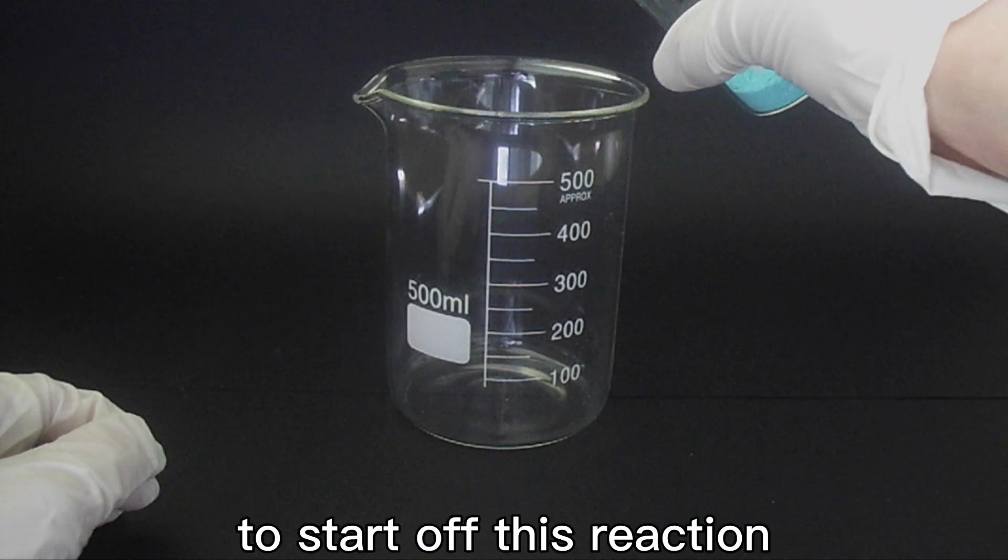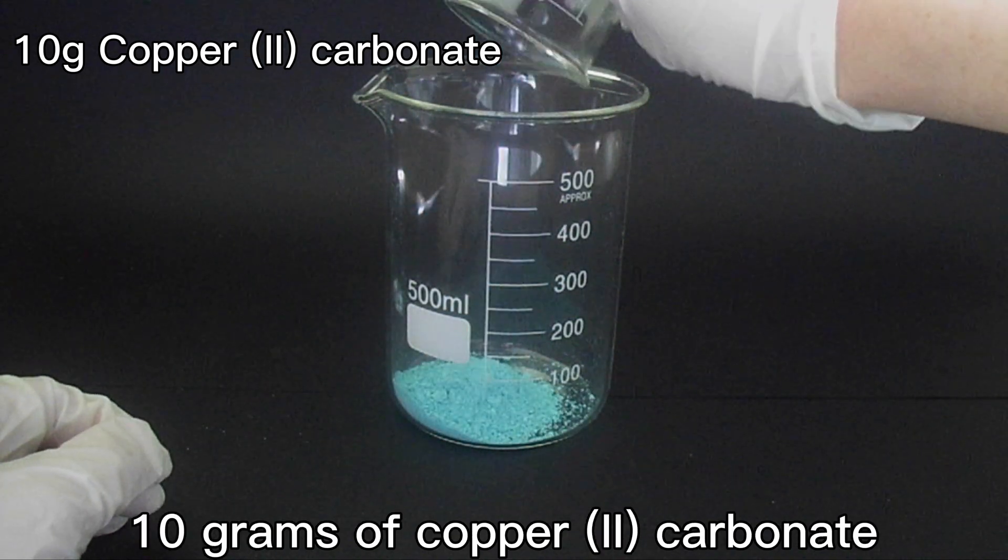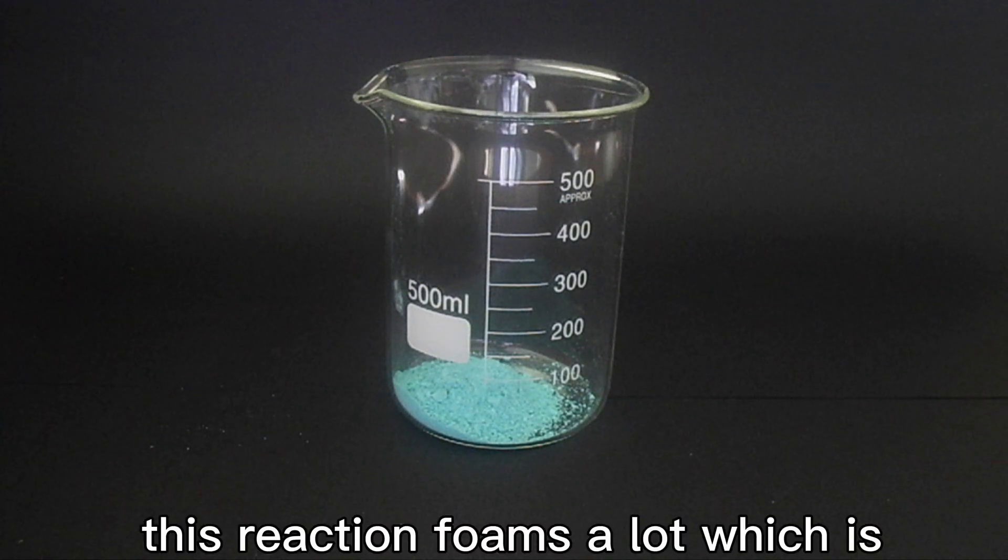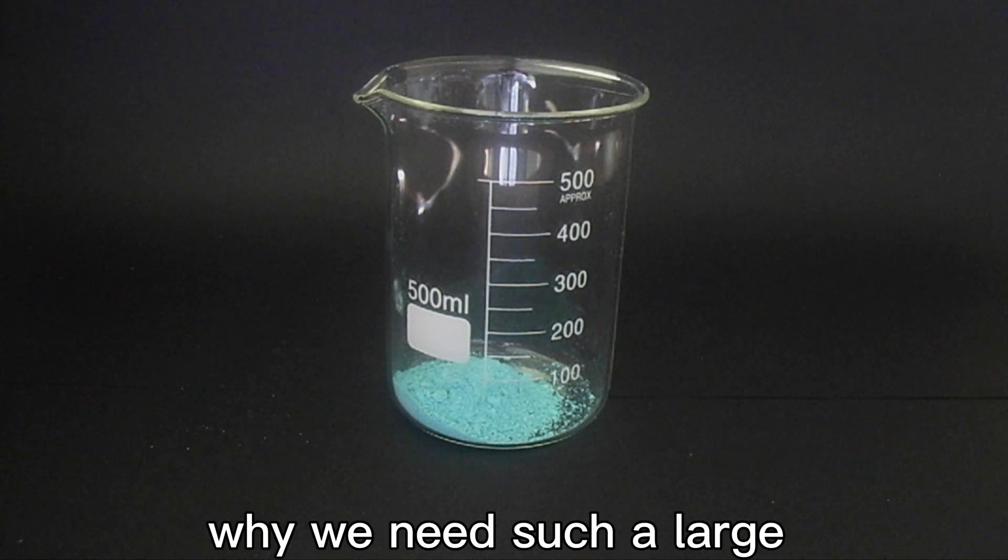To start off this reaction, we first need to weigh out 10 grams of copper-2-carbonate and add that to a 500 ml beaker. This reaction foams a lot, which is why we need such a large reaction vessel.